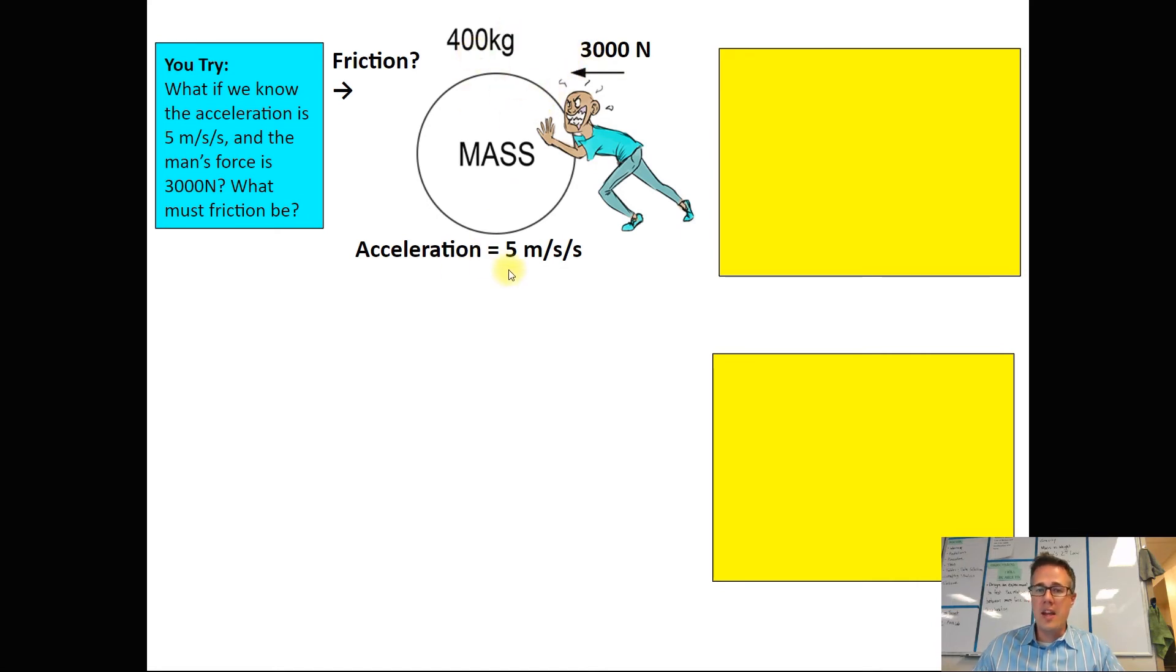We know the mass of the boulder and we know the acceleration, but there's also some friction working against him. If we know all these other pieces of information, we can use Newton's second law in order to solve for that missing force that's over here where friction is.